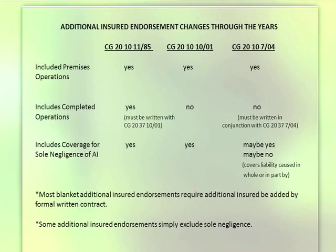Another way of providing coverage is under a blanket additional insured endorsement. That means there does not have to be a specific project or specific owner named on that blanket additional insured endorsement. Please be careful — this is my word of warning. Blanket additional insured endorsements in almost 100% of the cases require that there be a contractual requirement that you are named as an additional insured.